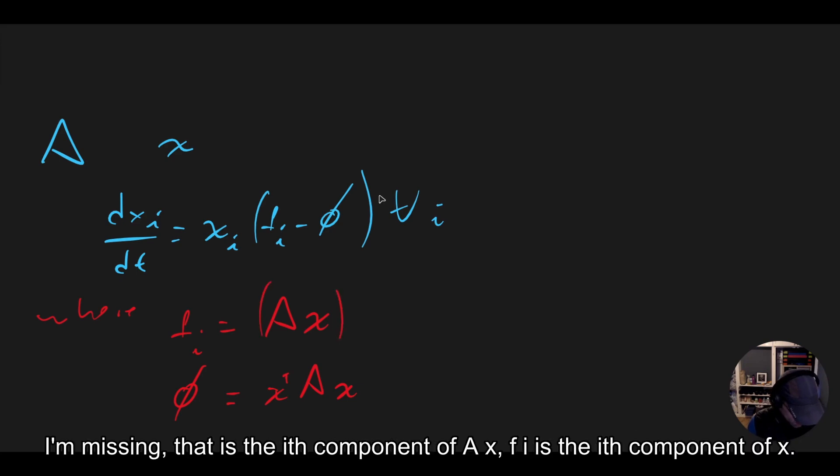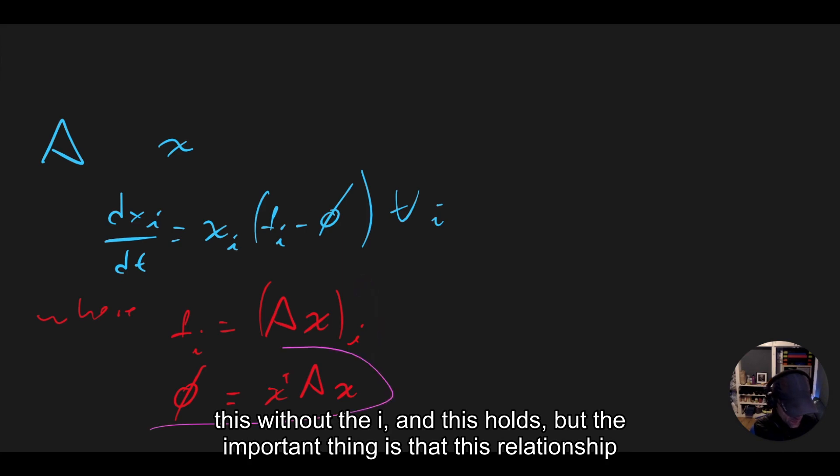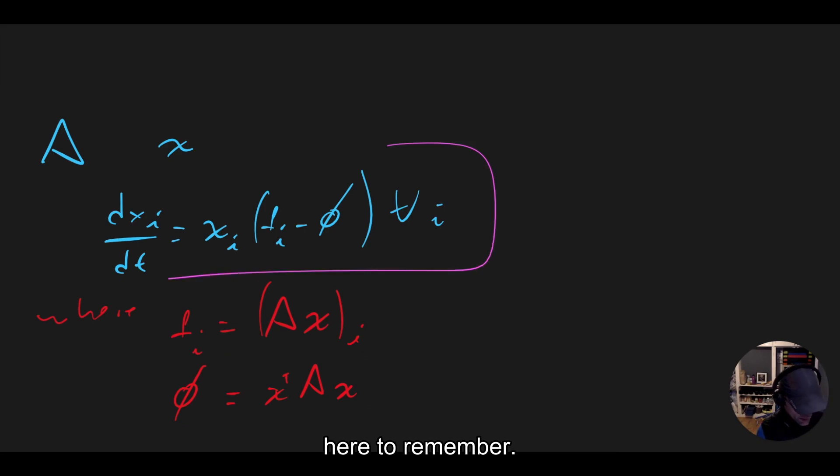I am missing, that is the i-th component of Ax. f_i is the i-th component of Ax. So there are actually linear algebraic versions of all of this, which is essentially to replace this without the i and this holds, but the important thing is that this relationship here to remember.